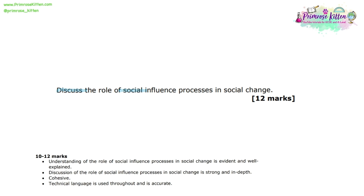Discuss the role of social influence processes in social change. There are 12 marks available for this question. From the mark scheme, to achieve the top mark band — between 10 and 12 marks — the understanding of the role of social influence processes in social change should be really clear and well explained, and the discussion of these processes should be strong and in depth, with lots of detail.